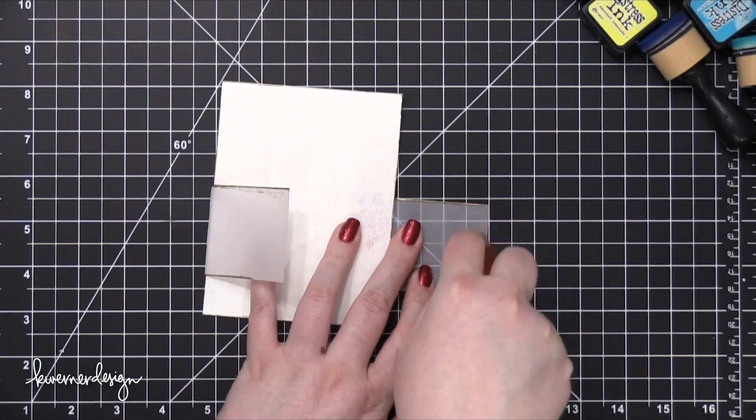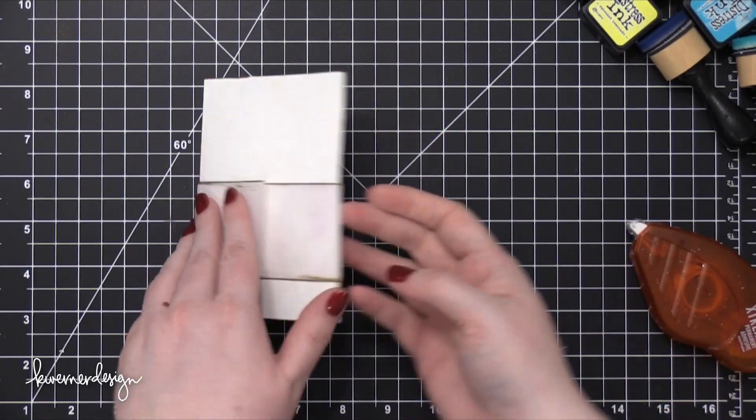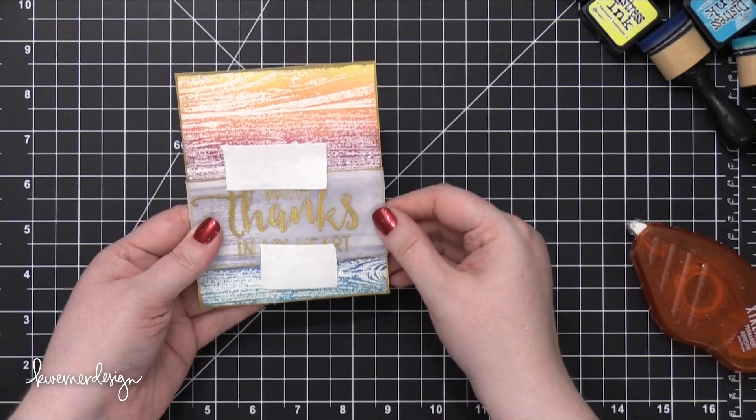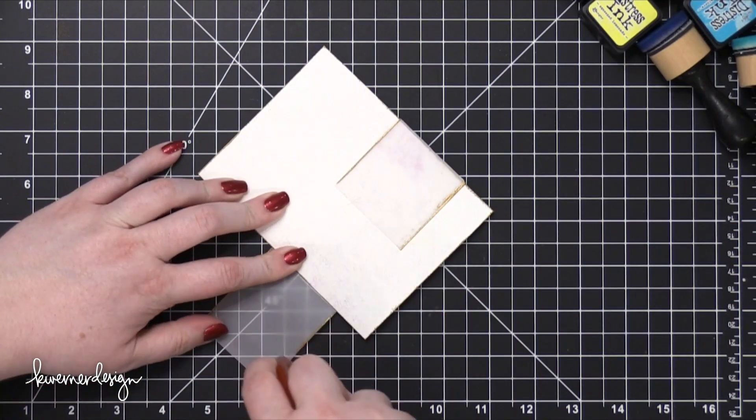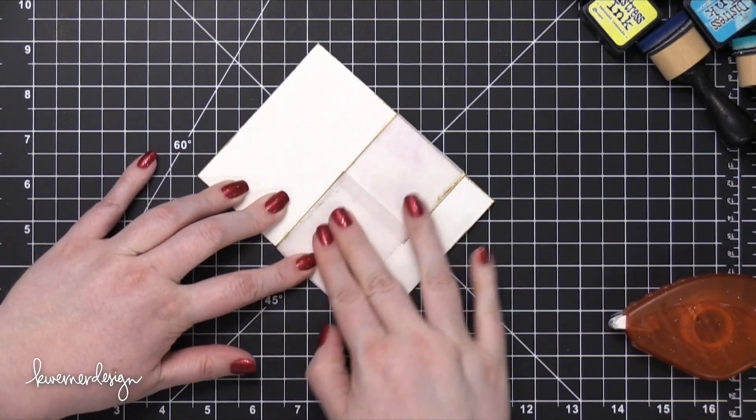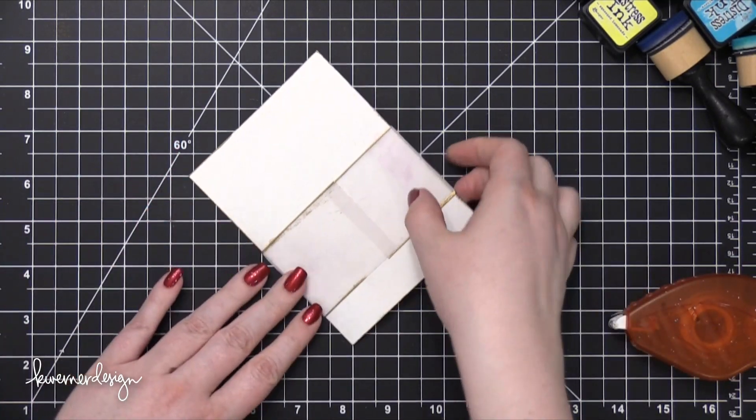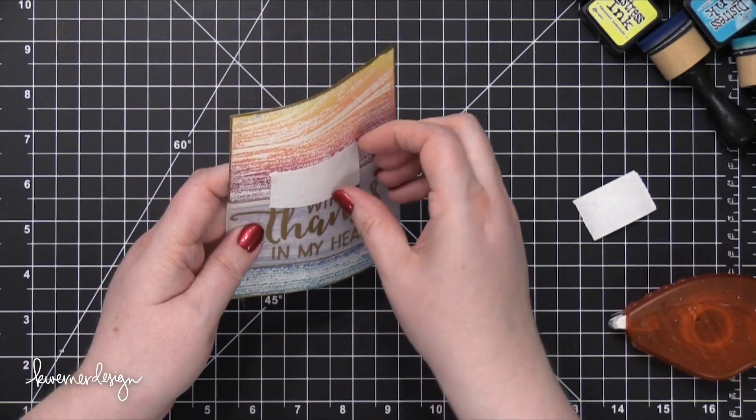So I'll use some Tombow Xtreme Adhesive, just a couple strips of that on the back of the vellum to adhere that down onto the background piece. And I'll go ahead and add two more lines of the adhesive on this side as well. This is just going to make it so that it doesn't slide around or lift up from the card. And then I'm going to remove that post-it tape and my card is almost complete.